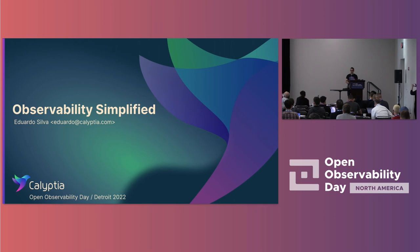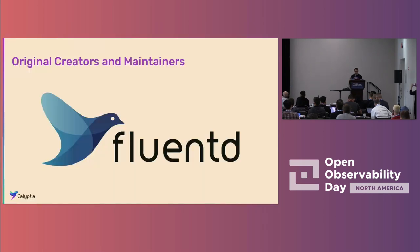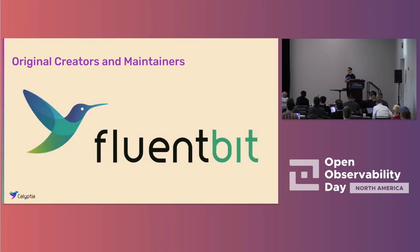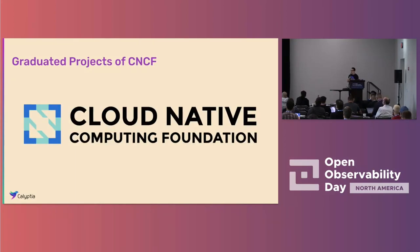That journey, at least from the open source ecosystem, started many years ago when we created a project called FluentD — originally a solution for monolithic systems to move logs or any type of data from point A to point B. This quickly evolved into a more cloud-native solution called FluentBit. Today we maintain both projects with a huge, very active community, and both are hosted by the CNCF in a graduated state, meaning they are production-ready.